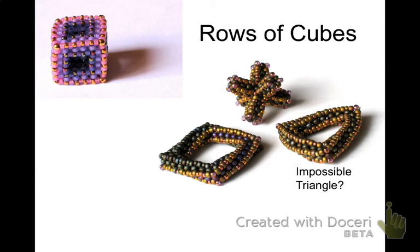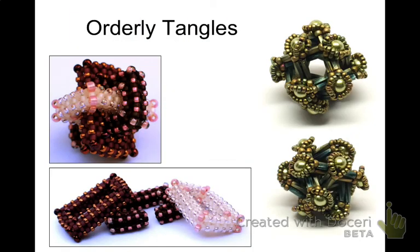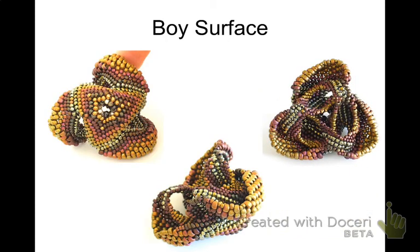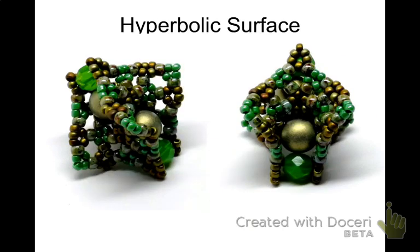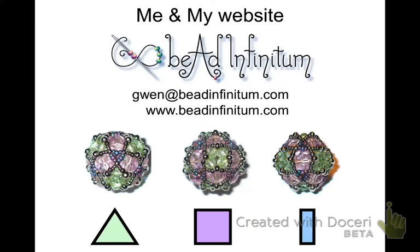Now back to beading with little beads. You can bead a row of cubes to make boxes and jacks. Since the beadwork is flexible, you can bead things like the impossible triangle of Roger Penrose, and now the impossible is merely unlikely. With rows of cubes, you can weave orderly tangles like the Borromean link, and different stitches can be used to make four intersecting triangles. You can even weave strange topological surfaces like this one, and hyperbolic surfaces like this one. In the end, it's all just a few beads and thread, but within these simple materials, the possibilities are infinite.